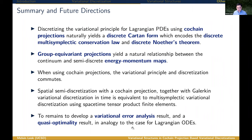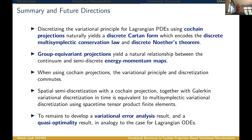Question from the audience: Can you elaborate on the connection between the continuous problem with the degenerate Lagrangian and the discrete one? That seems like an interesting perspective — could it help understand the relationship between the discrete and the original continuous solution?